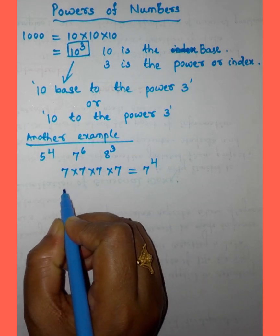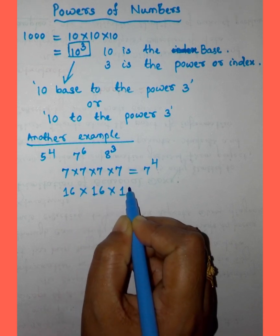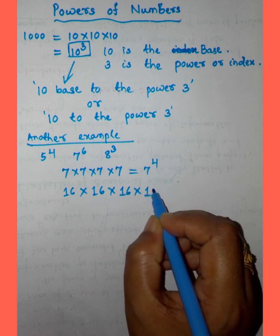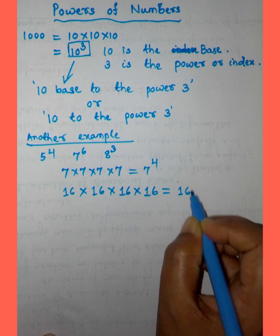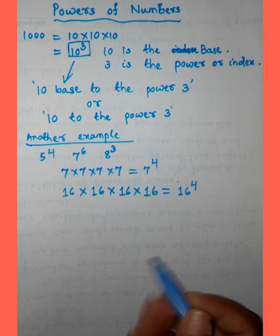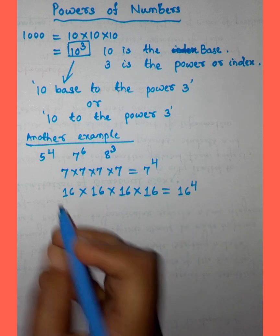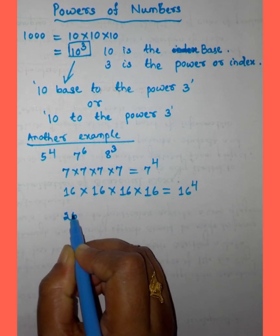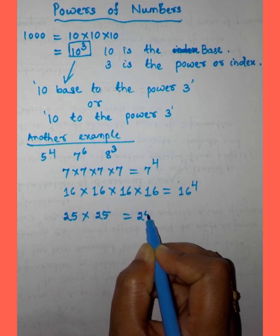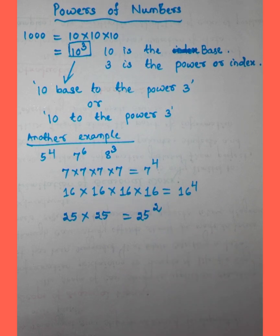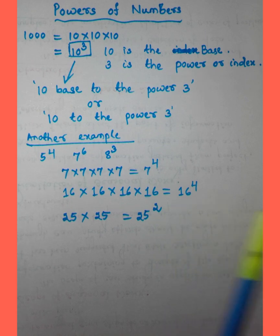We can also write 16 to the power 4. Here, 16 is the base and 4 is the power. And 25 is the base and 2 is the power or index.